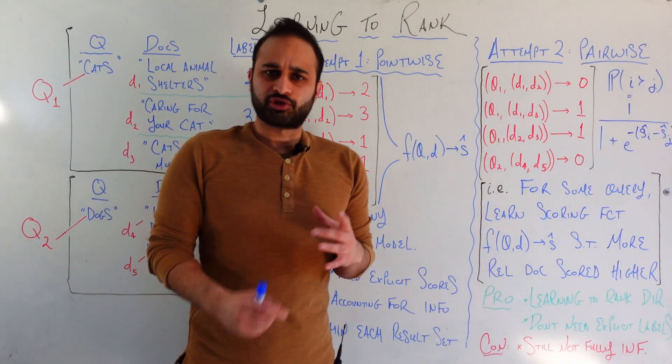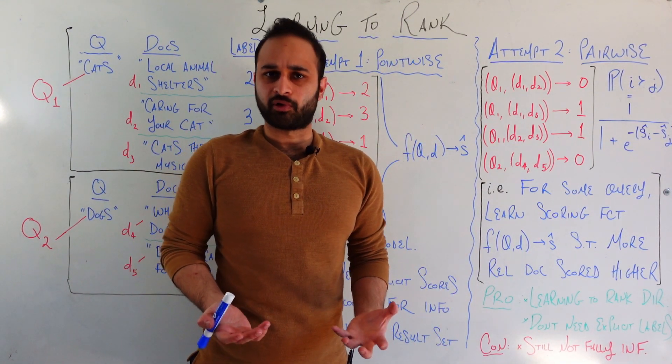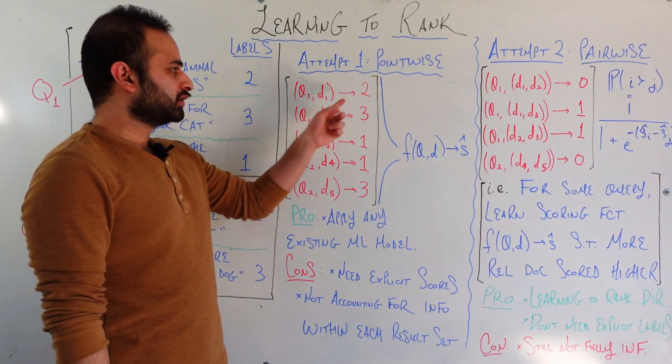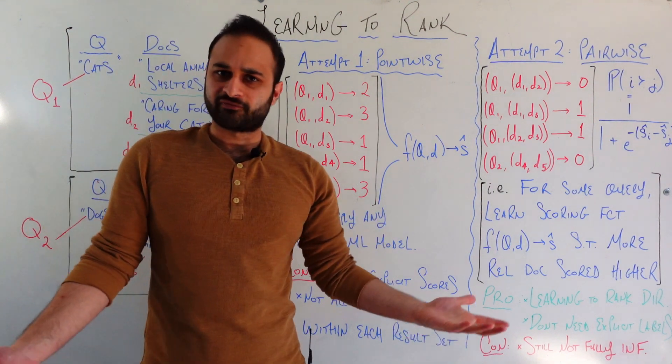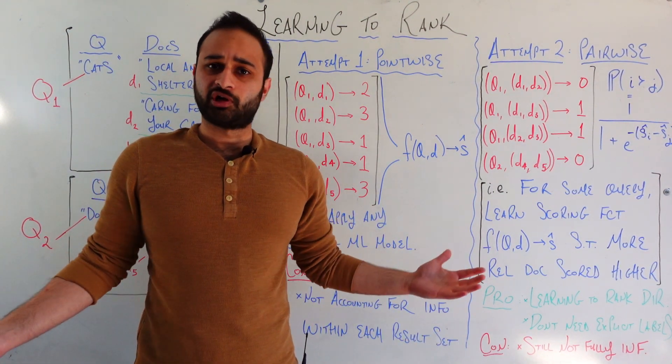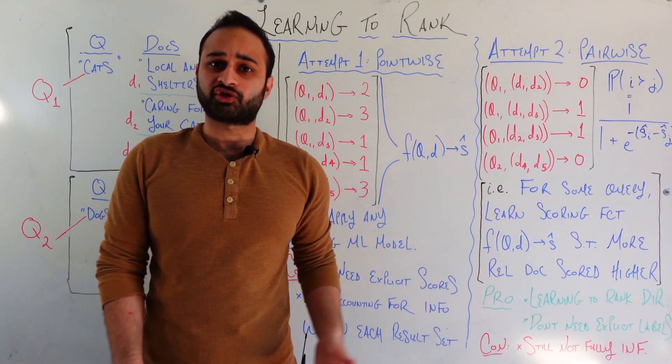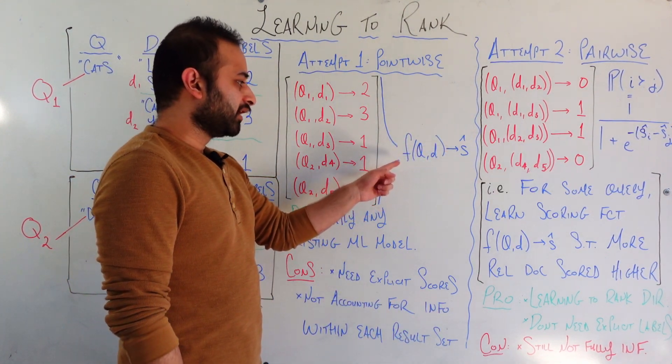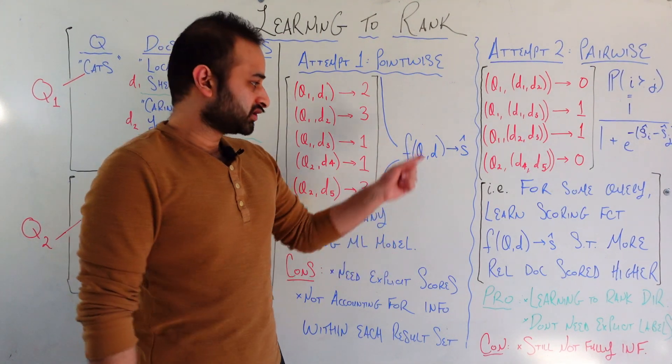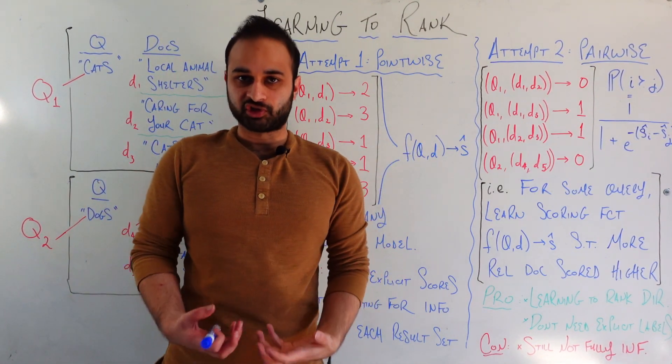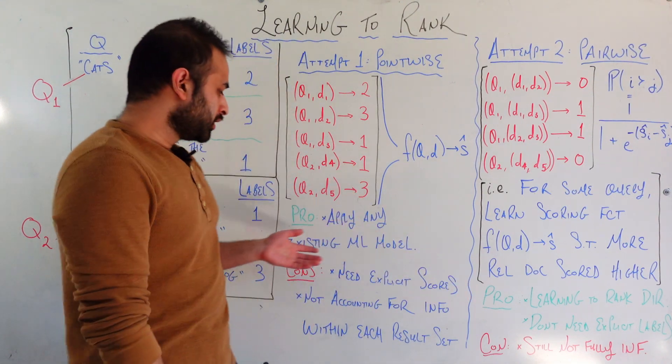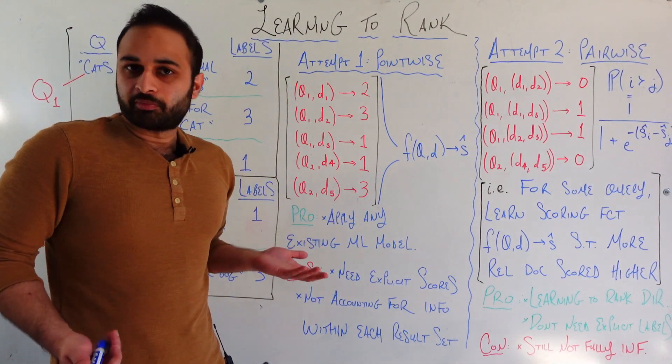So now we're starting to see how this is structured more like a traditional machine learning problem that we're all very used to. You have some features for each of these guys, and you have a label here. All that's left to do, you can apply your favorite machine learning problem. For example, we can use a regression or a classification problem in this case. And you'll just get a function at the end of the day that takes in a query, takes in a document, uses all those features derived from those guys, and outputs some predicted score s-hat.